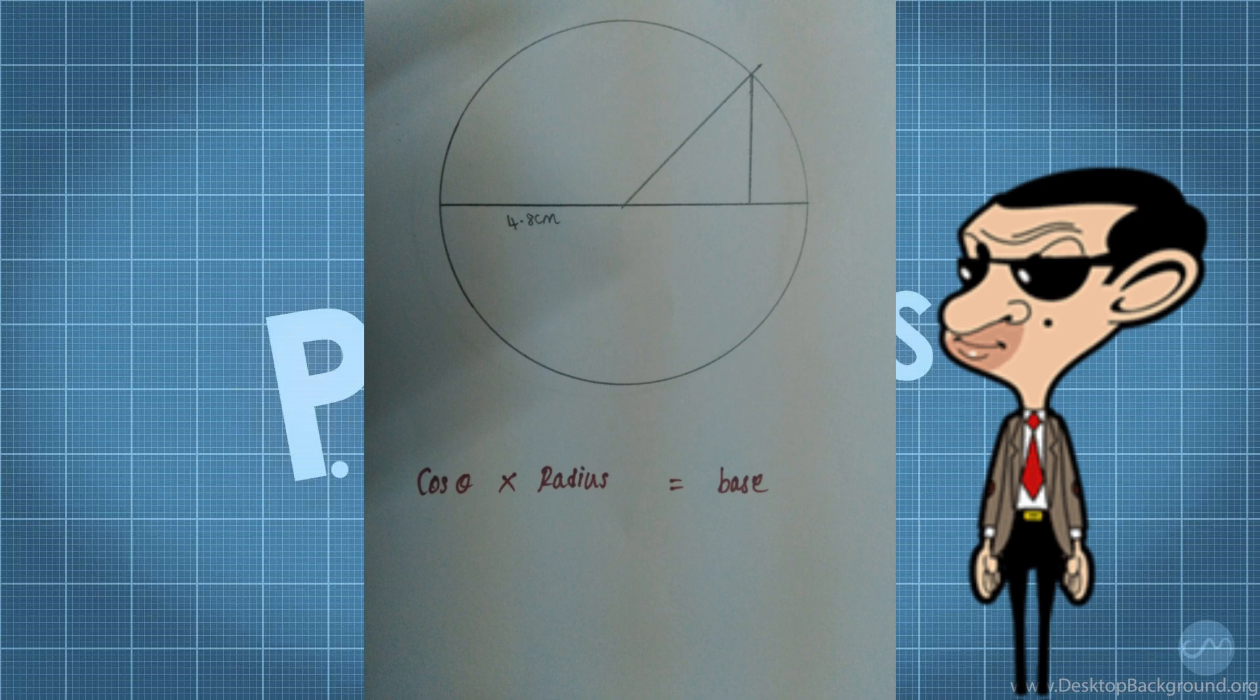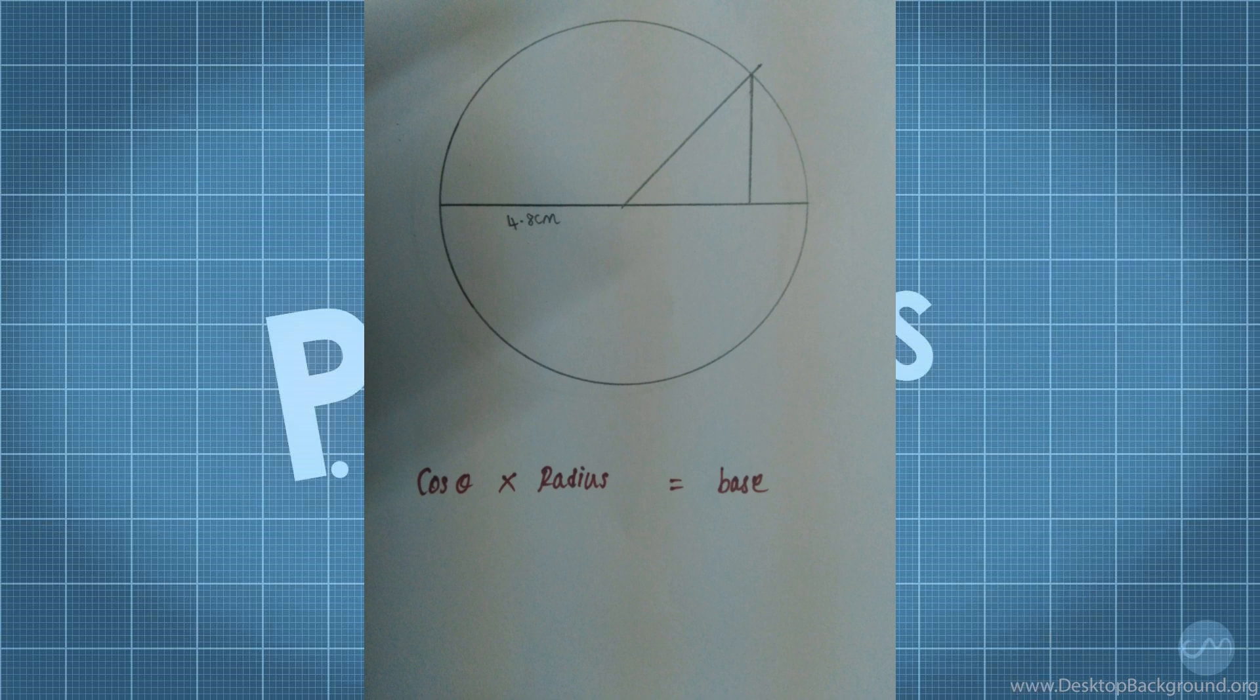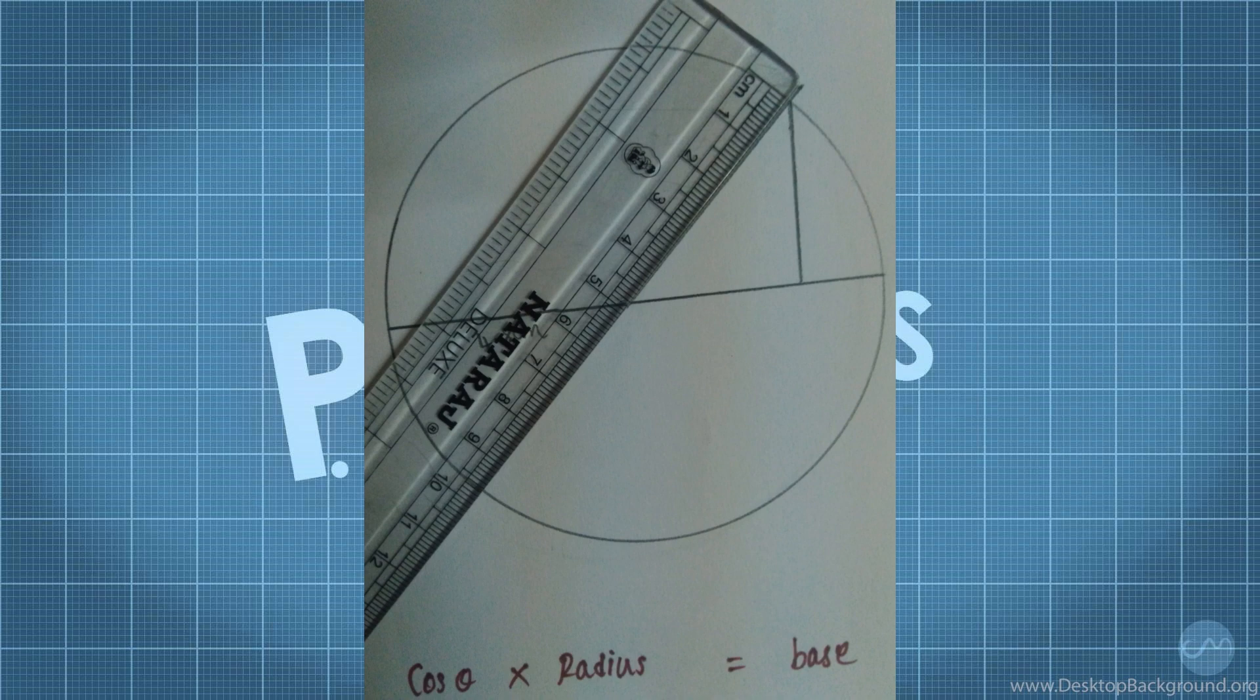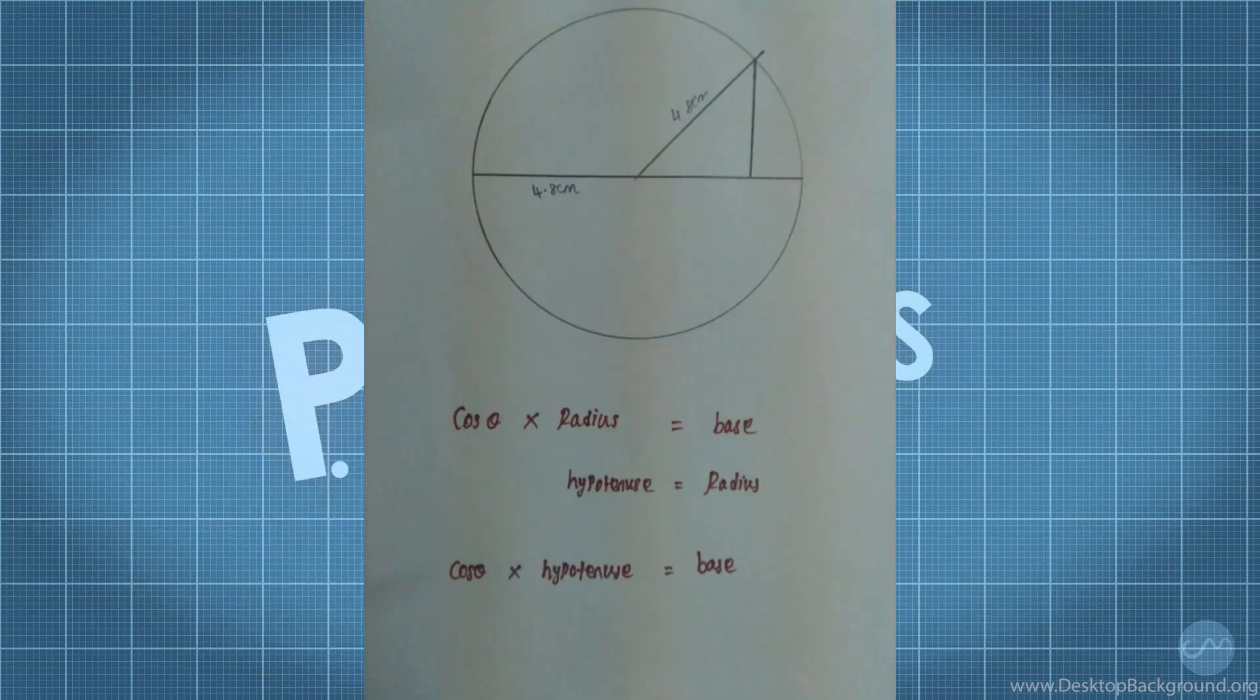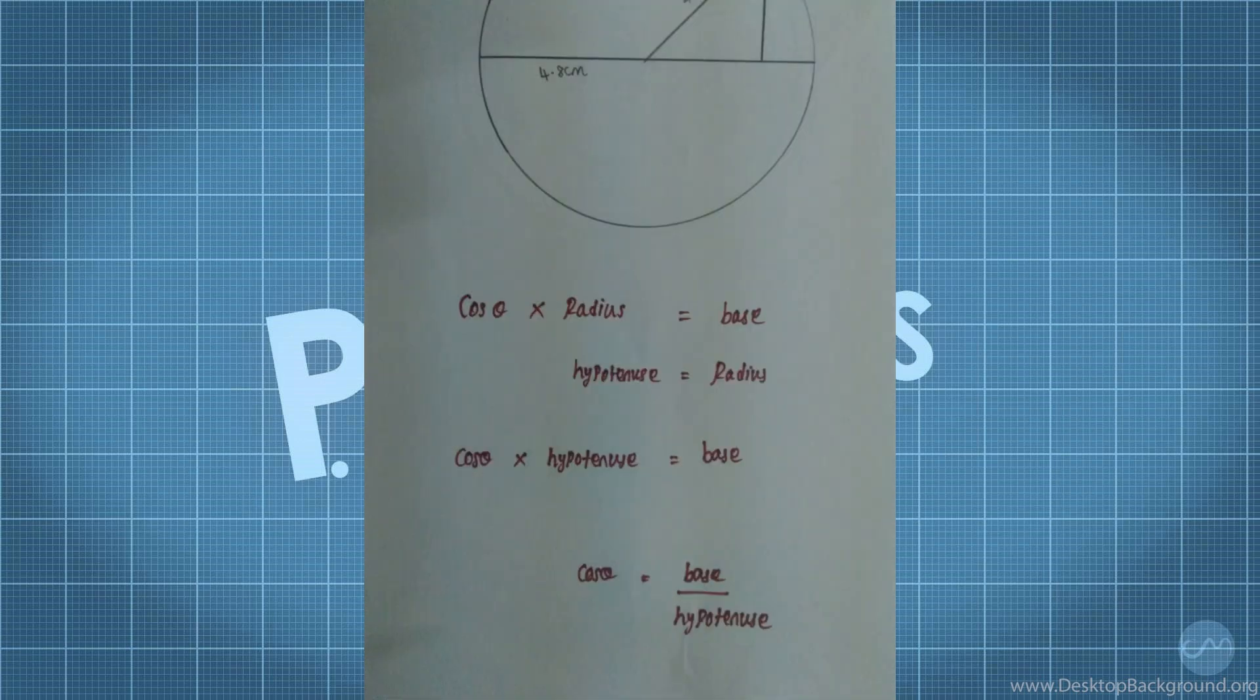If you look at a circle with a hypotenuse, the radius is equal to 4.8 cm. If you look at this sentence, the radius is equal to hypotenuse. So cos is equal to hypotenuse. If you look at hypotenuse, cos is equal to hypotenuse. This is the formula.